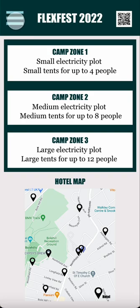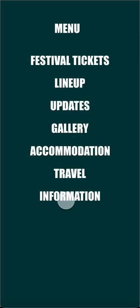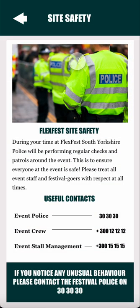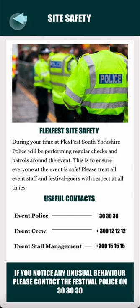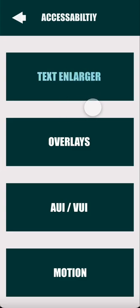The travel section has the buses, which is consistent with the website, and also the entrances so users know the main entrance, where they can park, and the foot entrance. The information section brings up site safety to tailor the companion app to the police persona — it tells them the useful contacts discussed in the personas, who will be looking after them, security precautions, and the police number, making sure safety measures are covered and festival-goers feel safe at the event.